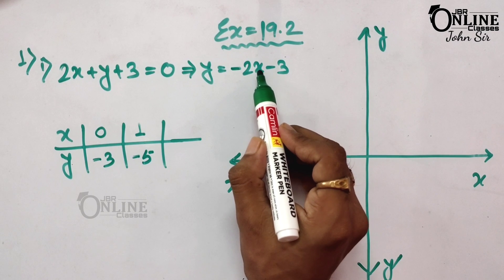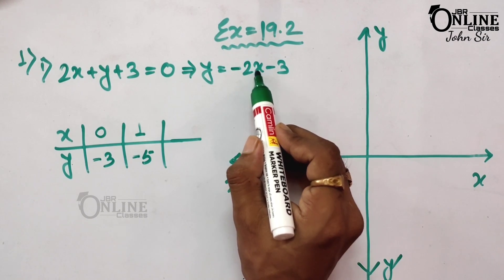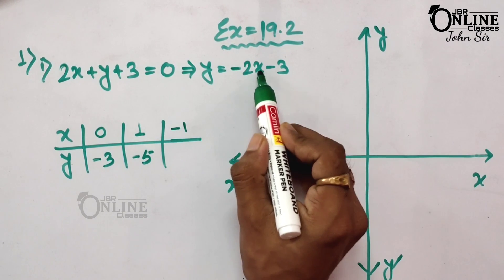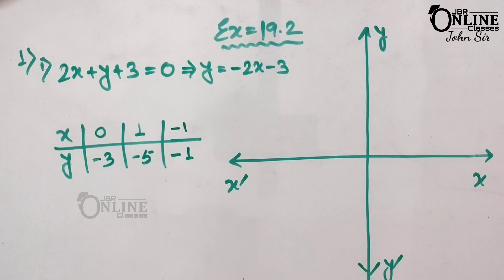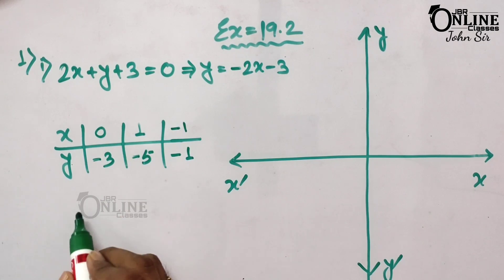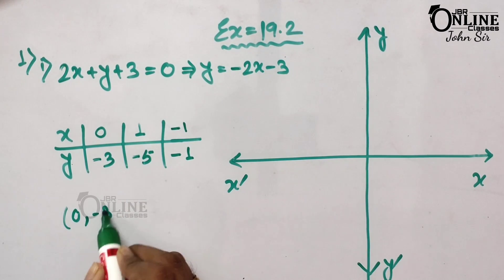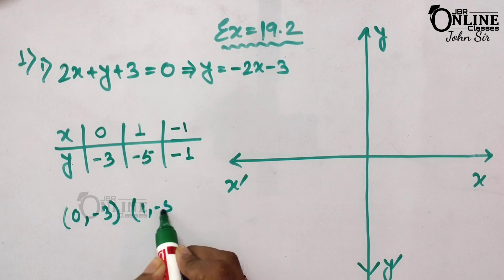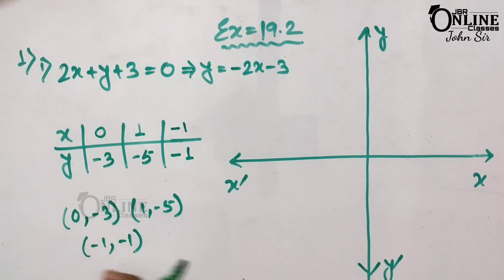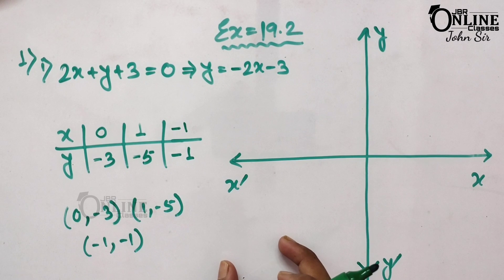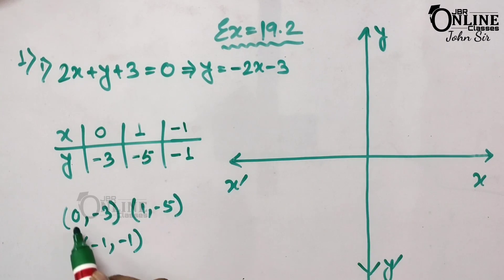The last coordinate: if x = -1, then y = -2(-1) - 3 = 2 - 3 = -1. So the three coordinates are (0, -3), (1, -5), and (-1, -1). With the help of these three coordinates you draw the straight line.